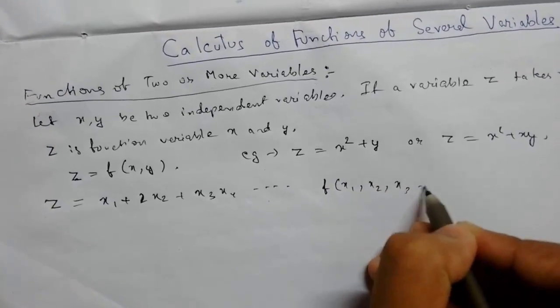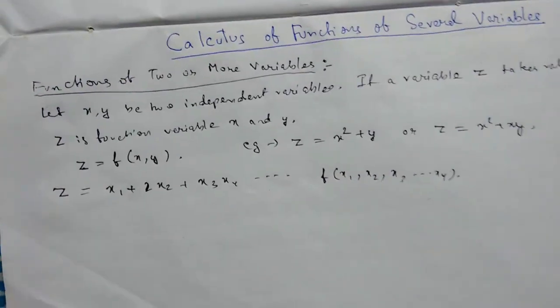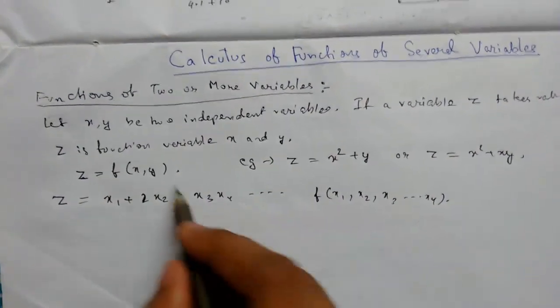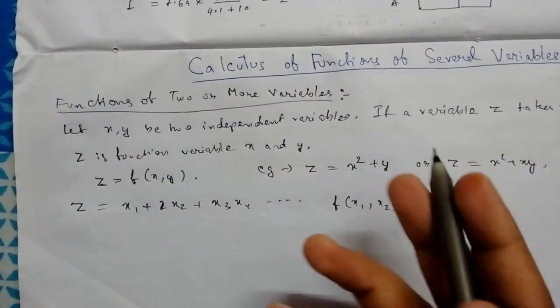So we can write this as x1, x2, x3, x4, something like that. So this is how a function looks like of two or more variables.